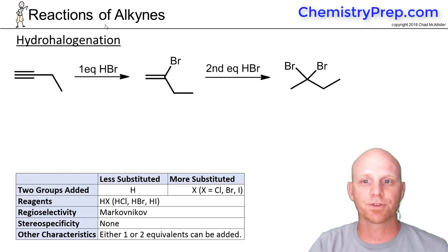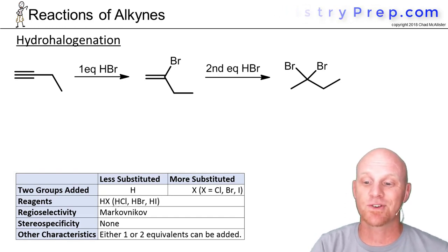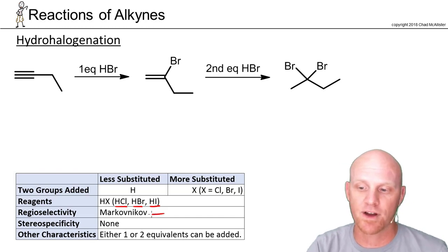The first of these addition reactions we'll take a closer look at is hydrohalogenation. In this case, hydrohalogenation involves either HCl, HBr, or HI, and it is a Markovnikov addition just like it was with alkenes.